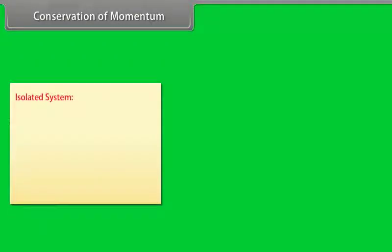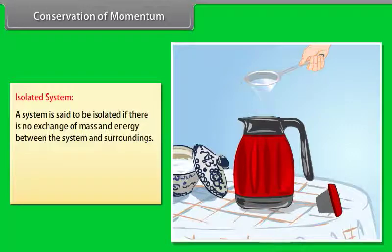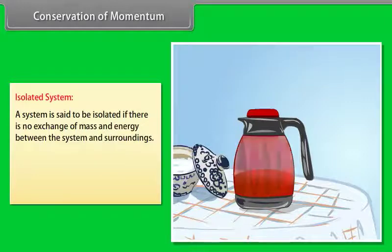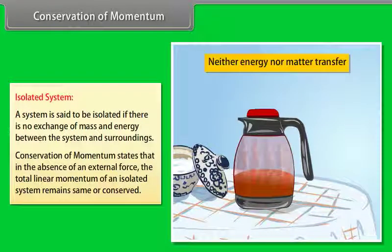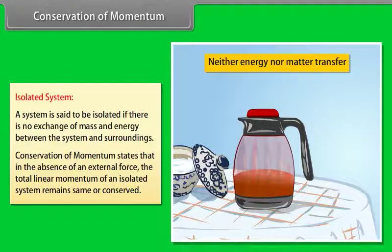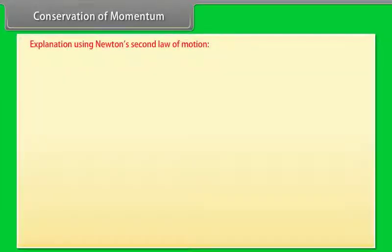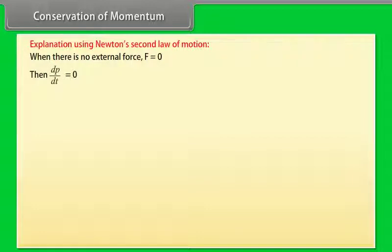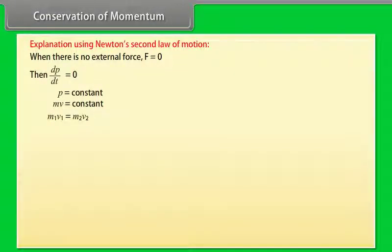Conservation of Momentum: A system is said to be isolated if there is no exchange of mass and energy between the system and surroundings. Conservation of momentum states that in the absence of an external force, the total linear momentum of an isolated system remains conserved. Using Newton's second law: when F = 0, dP/dt = 0, so P = constant, meaning MV = constant, or M1V1 = M2V2.